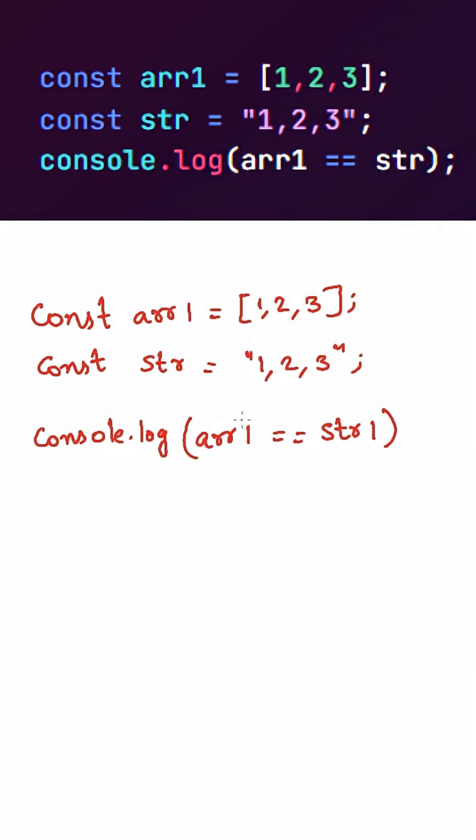Now JavaScript engine will perform type coercion on this array and it will use .toString method on this array, which will return string 1, 2, 3.